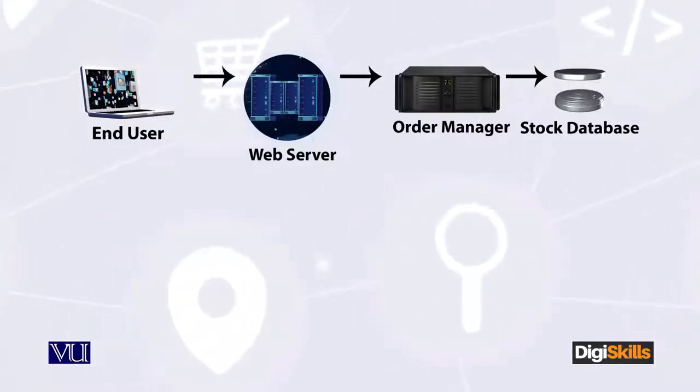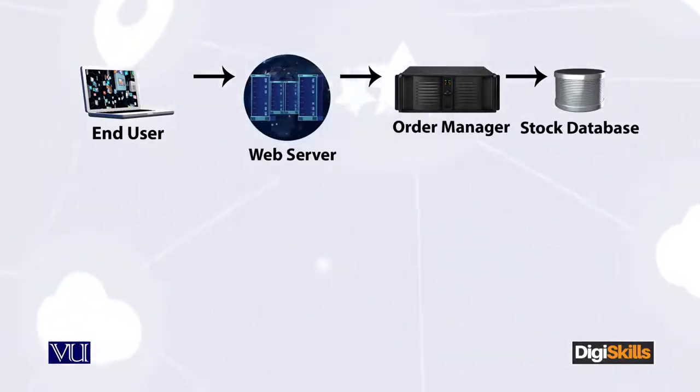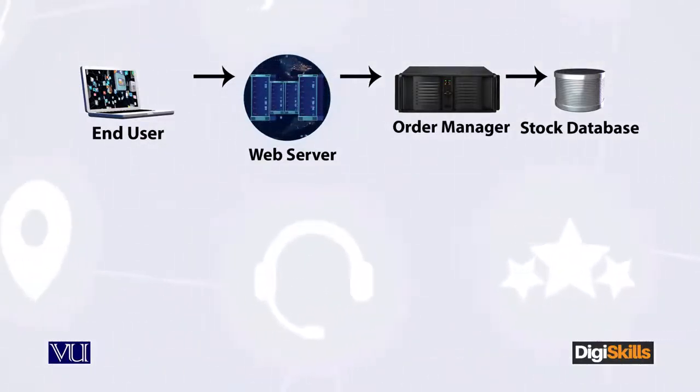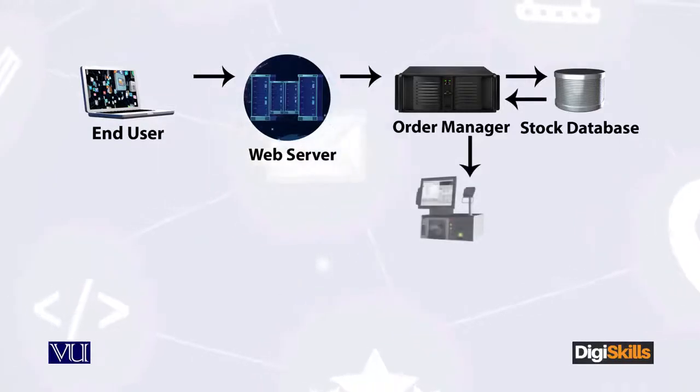When the order manager checks the stock and confirms that 10 mobile phones are available to fulfill my request, it will then go to the merchant system. The merchant system is like going to the counter in a physical shop — after you buy something, they give you a bill. If you bought 10 mobile phones, it becomes a certain amount. Since I am not in a physical store, I go to the payment mechanism.